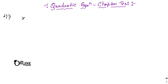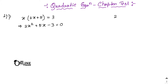Problem number 1: x(2x + 5) = 3. Multiply with x: 2x² + 5x - 3 = 0. The coefficient of x² is 2 and the last term is 3, so 2 × 3 = 6. The factors of 6 are 2, 3 and 1. We need to make 5.